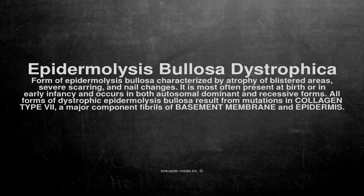Epidermolysis bullosa dystrophica is a form of epidermolysis bullosa characterized by atrophy of blistered areas, severe scarring, and nail changes. It is most often present at birth or in early infancy and occurs in both autosomal dominant and recessive forms.